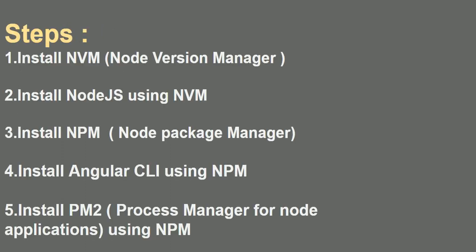These are the steps involved in today's lab. First, we should install NVM — Node Version Manager. Using NVM is the better way to install Node.js. Next, install Node.js using NVM. Then install npm, because if you want to install any Node-related packages like Angular and PM2, you need npm. Then install Angular CLI using npm, and finally install PM2 using npm, since PM2 is also a Node-related package.